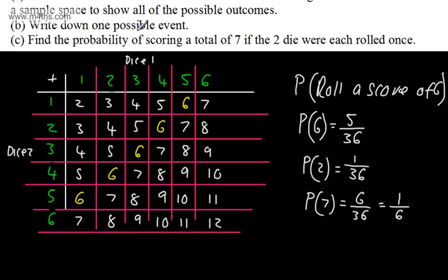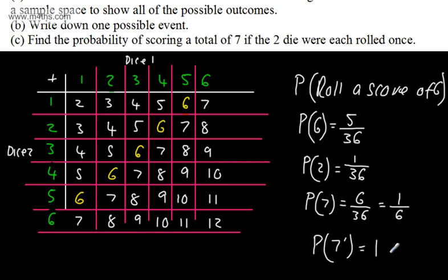Let's look at the probability of not getting a seven. We could count all outcomes that aren't seven, or alternatively use one minus the probability of a seven — as we covered in the last video. The probability of something not happening is one minus the probability of it happening. So one minus one sixth gives us five over six.